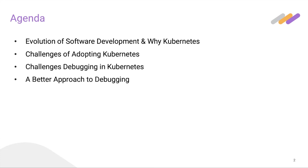What we'll talk about today is starting with the evolution of software development and why organizations today are considering adopting Kubernetes as their platform of choice for running distributed cloud-native applications at scale. We'll look at some of the challenges organizations typically face when making those decisions, as well as the challenges developers face when debugging Kubernetes applications. And finally, we'll talk about a potentially better approach to debugging — one that takes advantage of modern debugging tools that can save developers a lot of time and make your customers happy because you're solving their issues at a faster, more rapid pace.